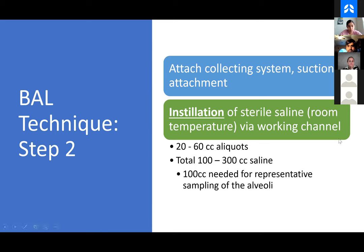Definitely attach a collecting system, otherwise your BAL is collecting nothing. We usually do aliquots depending on the patient's reserve — I generally do 40 to 60cc. You can do anywhere from 20 to 60cc at a time. You really want around 50 to 100cc to say that you're representative of what's happening at the level of the alveolus. I usually send about 40 to 50cc, which is fine for most purposes — it really just depends on how many tests you need to send.